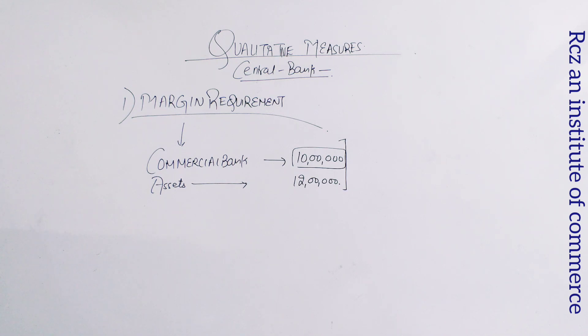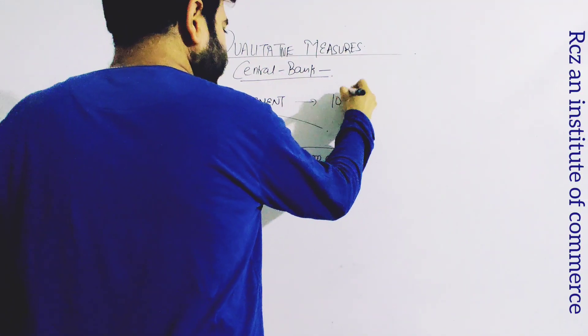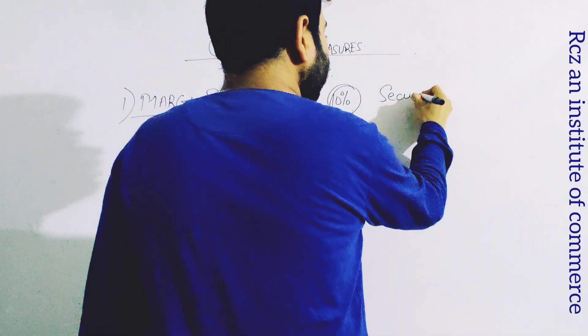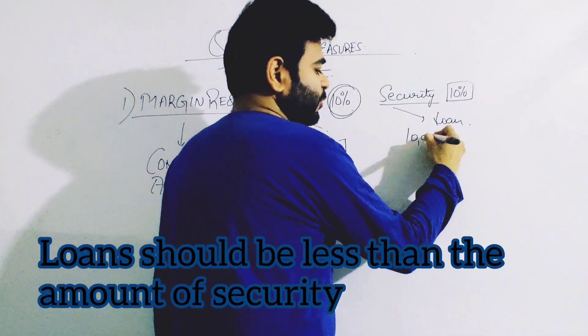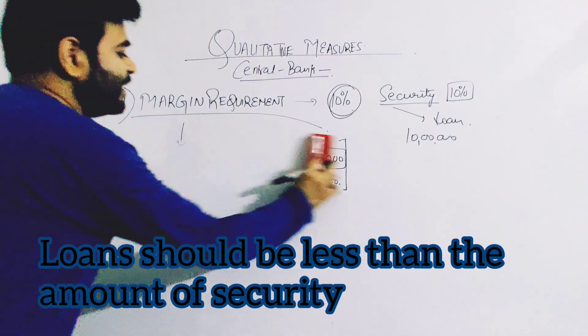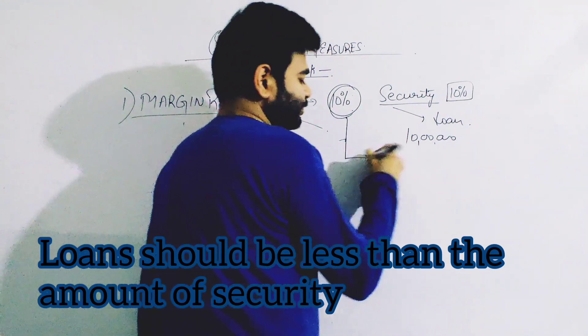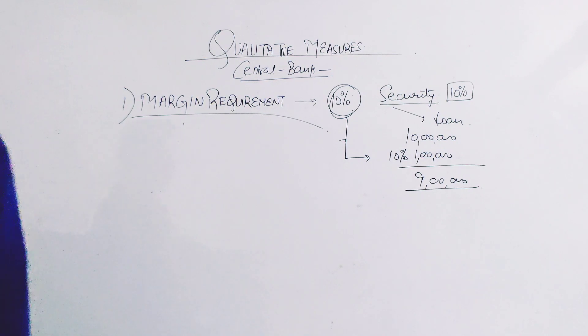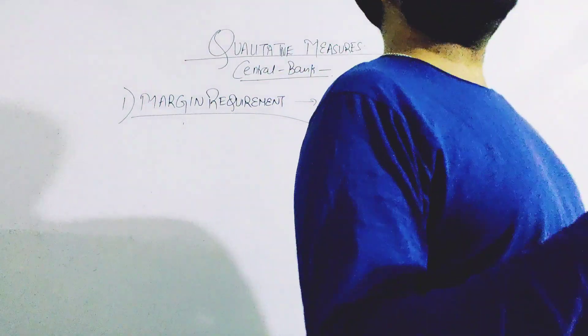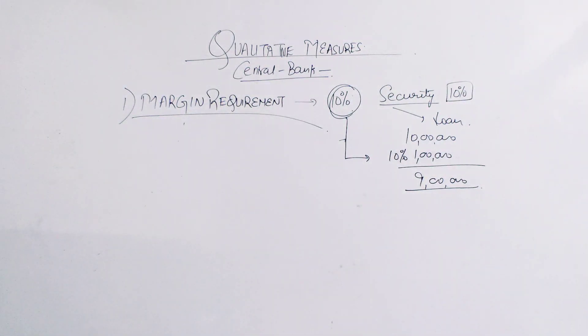Whatever security has been given, margin applies. Sometimes RBI fixes the rate of margin, that bank is allowed only up to this much of security you can give loan. For example, if my margin is 10% of the security value, I can give that.